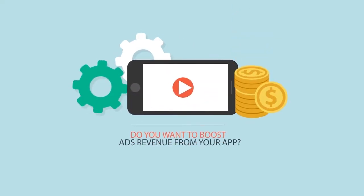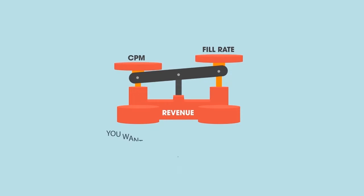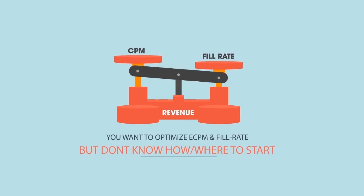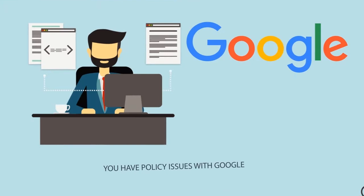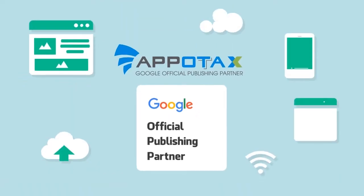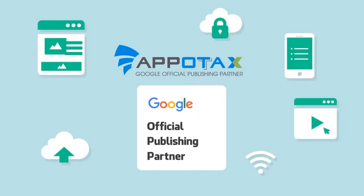Do you want to boost ads revenue from your app? You want to optimize eCPM and fill rate but do not know how to start. You have policy issues with Google but have no direct support. AppleTile SX — highest possible revenue for each impression.